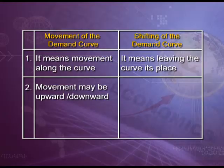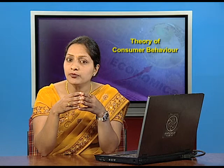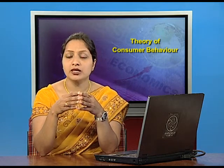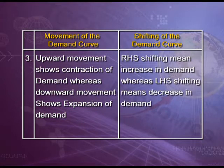Movement may be upward or downward, whereas shifting may be in two directions — either to the right-hand side or to the left-hand side. Regarding the impact of direction: if the demand curve moves downward it means an increase in quantity demanded, and if it goes upward it means a decrease in quantity demanded. If the demand curve shifts to the right it means an increase in demand, and if it shifts to the left it means a decrease in demand.